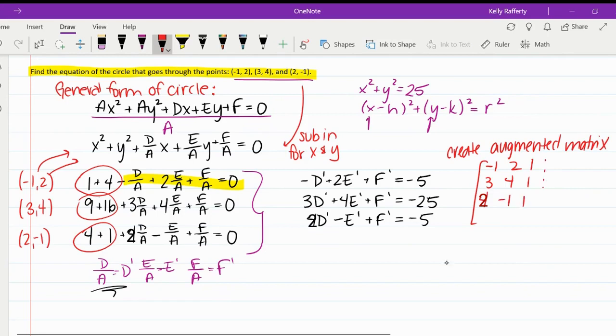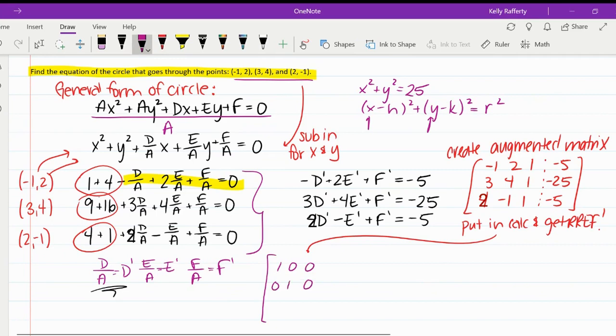So if you're doing a problem like this in class, I would expect to see this matrix that's going in the calculator. Let me clean this guy up a little bit. And I'm going to say put in calc and get reduced row echelon form. And I'm going to write over here what it would be. I'm going to put it in the calculator really quick to make sure I didn't make any mistakes for you guys. And I end up with negative 10 thirds, negative 10 thirds, and negative 5 thirds. So remember what these are, right?